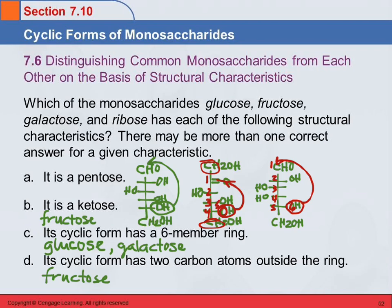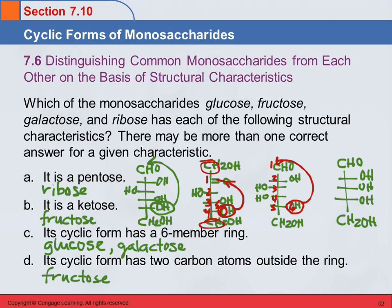Ribose. Ribose is like glucose but it's missing one carbon — it has CH₂OH at top, then OH, OH, OH. Is it a pentose? Yes — we finally found our pentose. Is it a ketose? No. When it forms its cyclic form, this hooks up with carbon 1: 1, 2, 3, 4, 5 — a five-membered ring. And how many carbons are outside the ring? Just one.